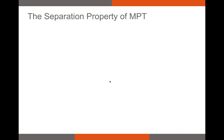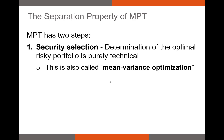Modern portfolio theory can be broken down into two steps. The first step, which we focus on in this video, is called security selection. This is where we identify the ideal portfolio weights assigned to different equities, options, and other risky assets. This security selection step is often called mean variance optimization, or MVO. We take correlations, standard deviations, and expected returns of assets and let the computer decide what ideal weights maximize our Sharpe ratio.